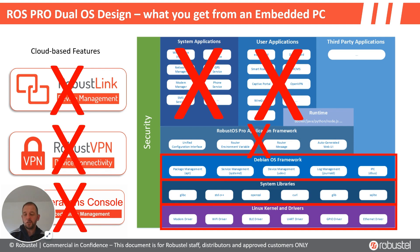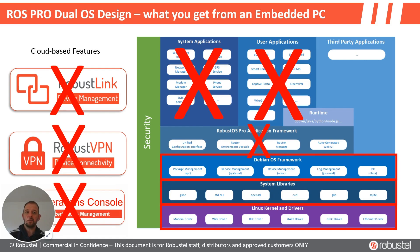If you just went and bought a single board computer or an embedded PC, in comparison, this is what you would get: typically no cloud features, no higher-level routing functions or a router operating system natively. You may be able to buy it with some kind of Linux distribution installed, or it might be just a bare-bones device you have to configure yourself. Everything that doesn't come with your embedded PC or SBC is something you need to think about configuring and installing yourselves — and that all equates to time. This is the core of the pitch, certainly in software.